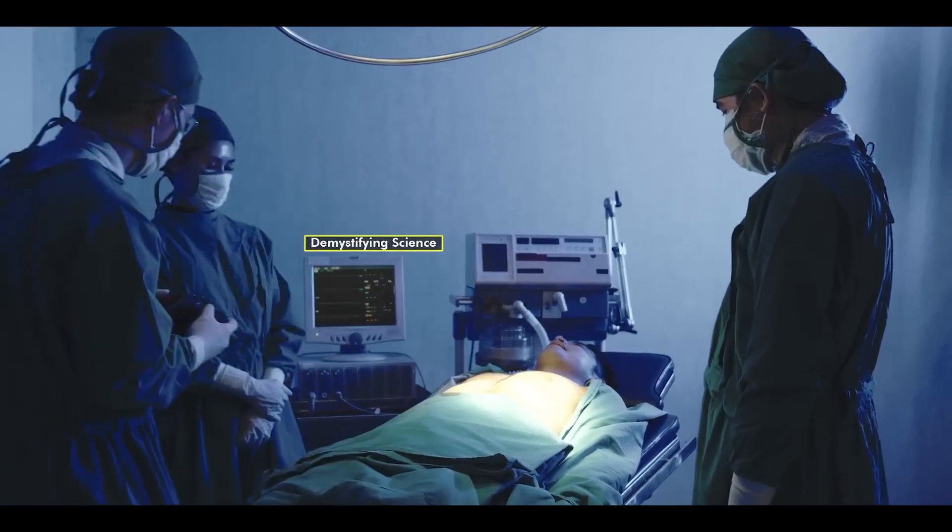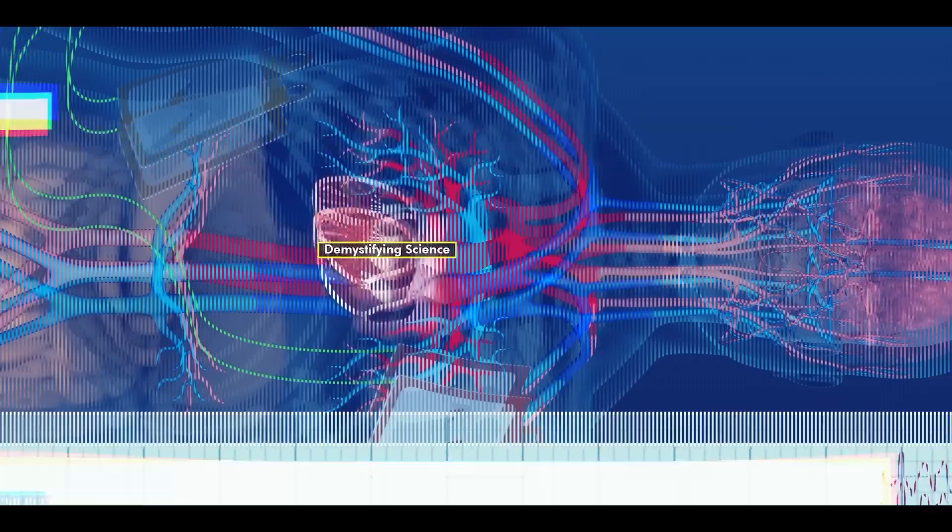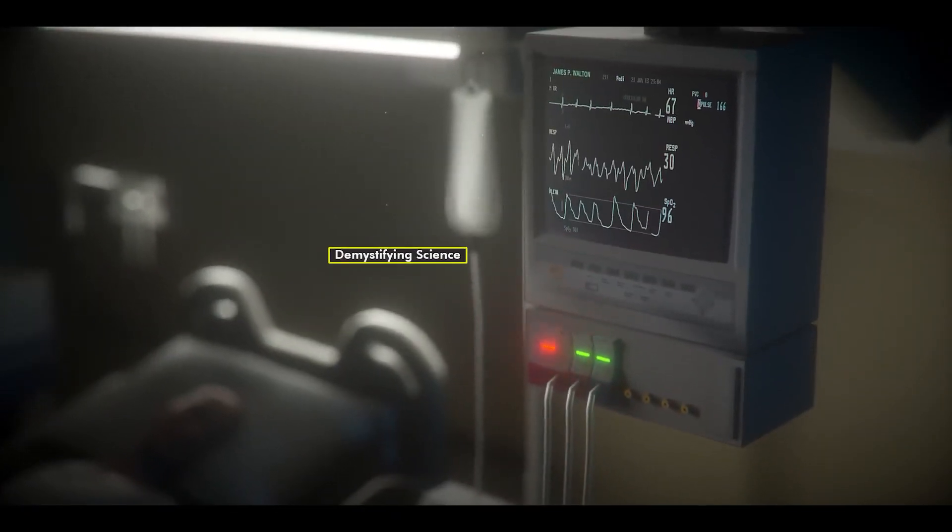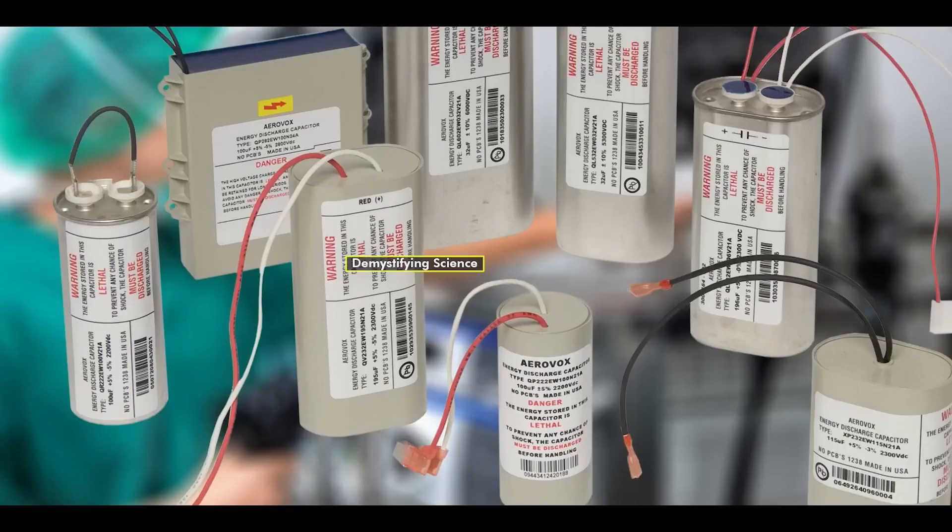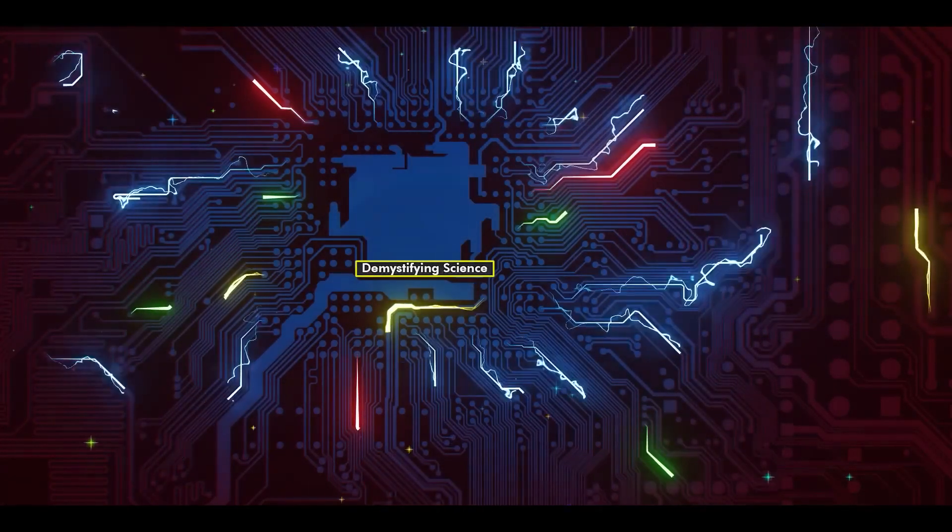The electrodes, sometimes called paddles, read our heartbeats while the processor analyzes them. Additionally, the battery and capacitor work together to produce the electric shock.